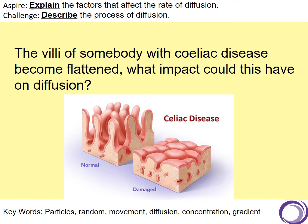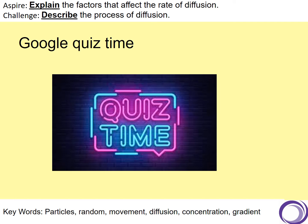This is the villi - this is the small intestine of somebody who has celiac disease. If you look at the normal person, they have all of these villi, these lovely finger-like projections. But if you look at celiac disease, it has become flattened. So what would that do to diffusion? It decreases the surface area, so therefore diffusion will be much less, and those people will struggle to get the nutrients they need into their body.